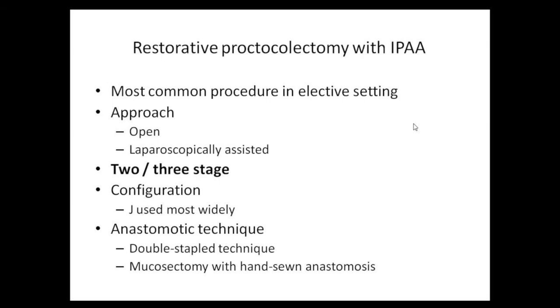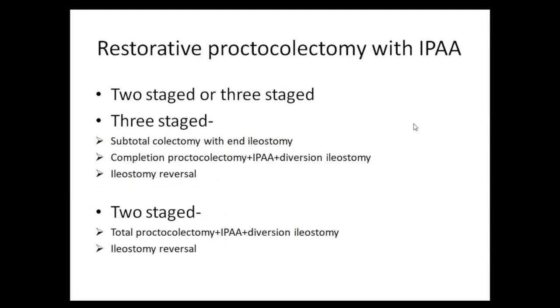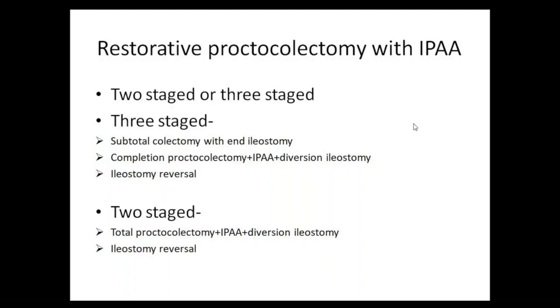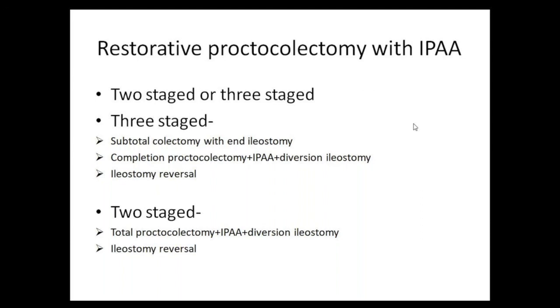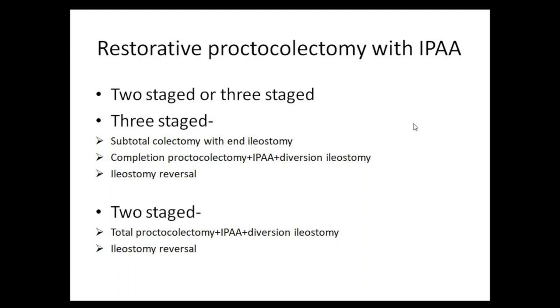The standard anastomotic technique is the double-staple technique. Three-stage surgery is performed in emergency cases. The first stage is subtotal colectomy with end ileostomy, and the distal rectal stump is managed as a mucous fistula, placed in the subcutaneous plane, or closed as a Hartmann's procedure. The second stage involves ileostomy takedown, completion proctocolectomy, IPAA, and a diversion ileostomy. The third stage is ileostomy reversal.